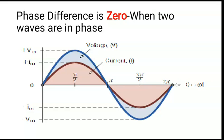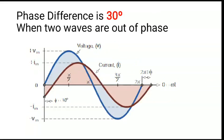Now here the phase difference is 30 degrees. These two waves are out of phase because they do not have a phase difference of zero. If there is any difference in phase between them, they are said to be out of phase.